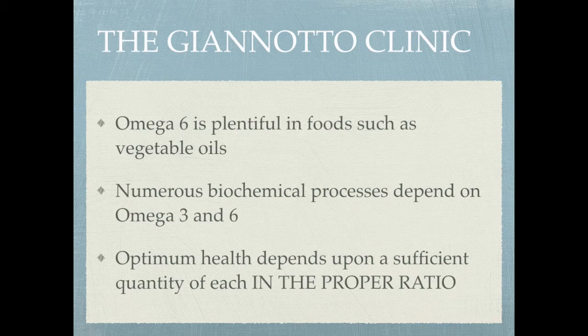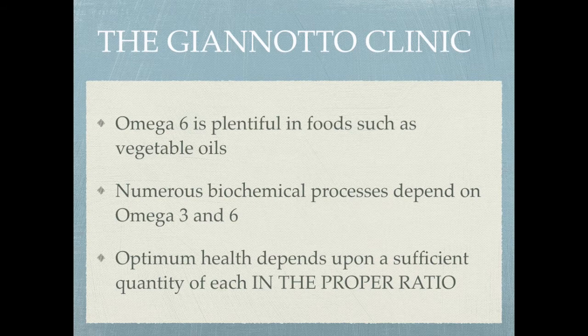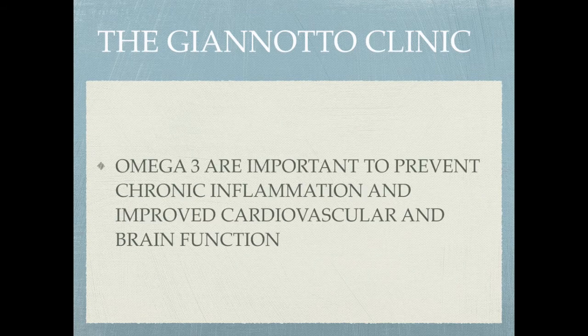Omega-6 is plentiful in foods such as vegetable oils. Numerous biochemical processes depend on both omega-3s and omega-6s, but optimal health depends upon a sufficient quantity of each in the proper ratio. The proper ratio of omega-6s to omega-3s is the key to fats, ladies and gentlemen. Omega-3s are important to prevent chronic inflammation and to improve cardiovascular and brain function.